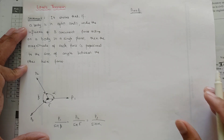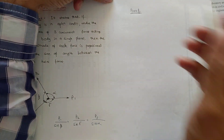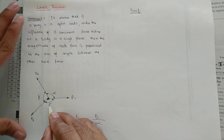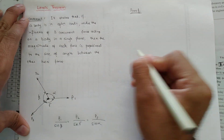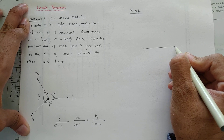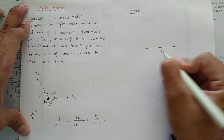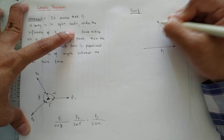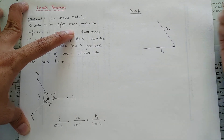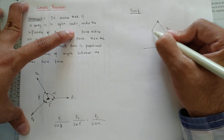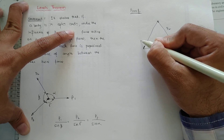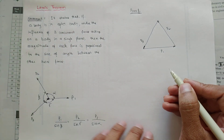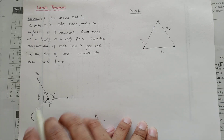Now let's prove this. For the same forces P1, P2, and P3, if we draw them according to their magnitudes and directions, we get P1, then P2, then P3, by applying the polygonal law of the force system.